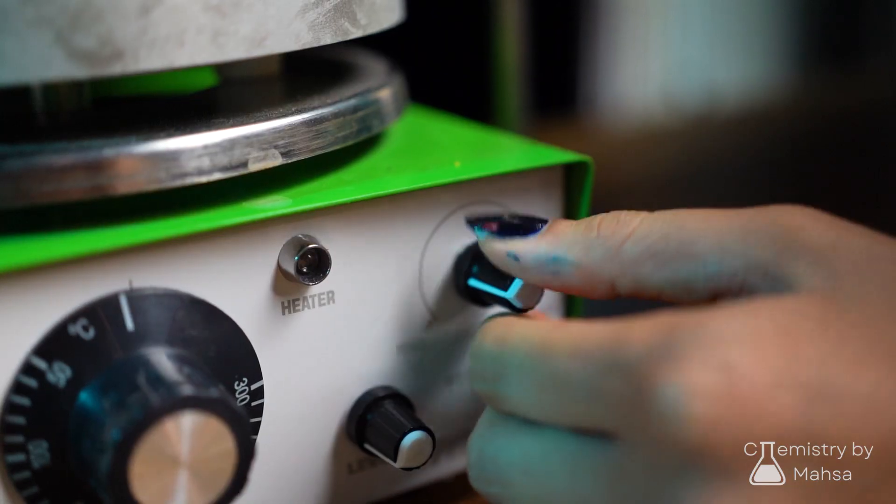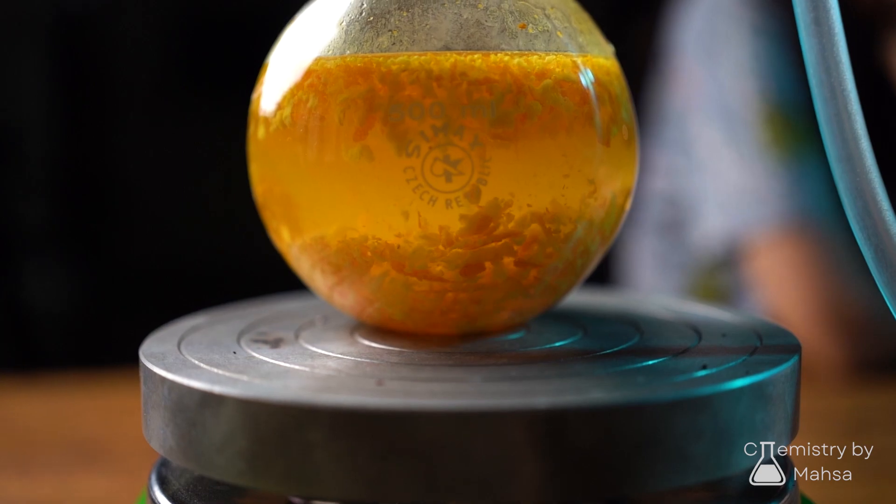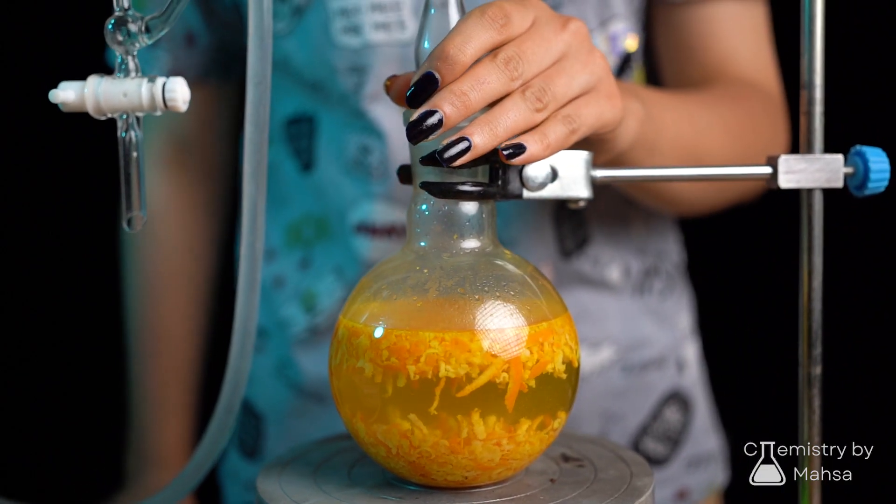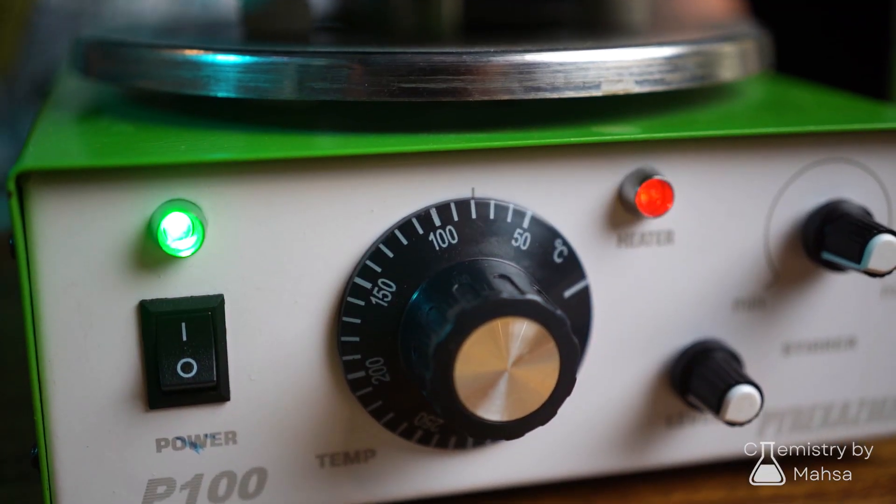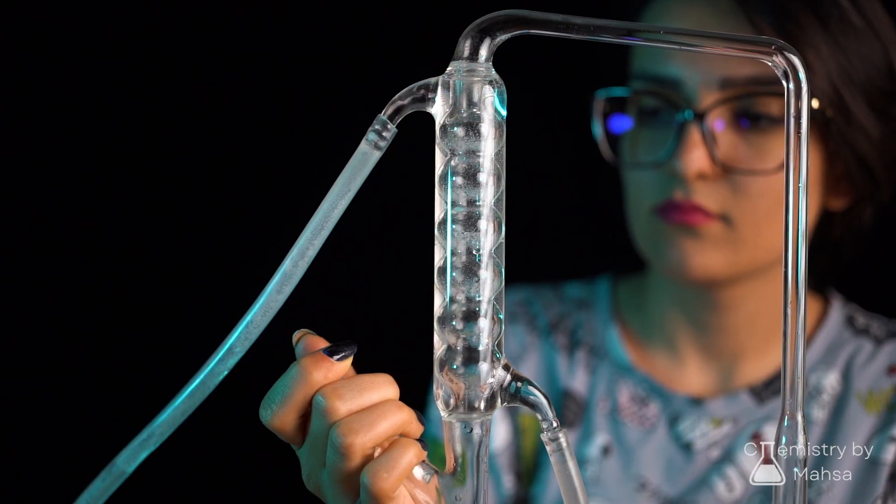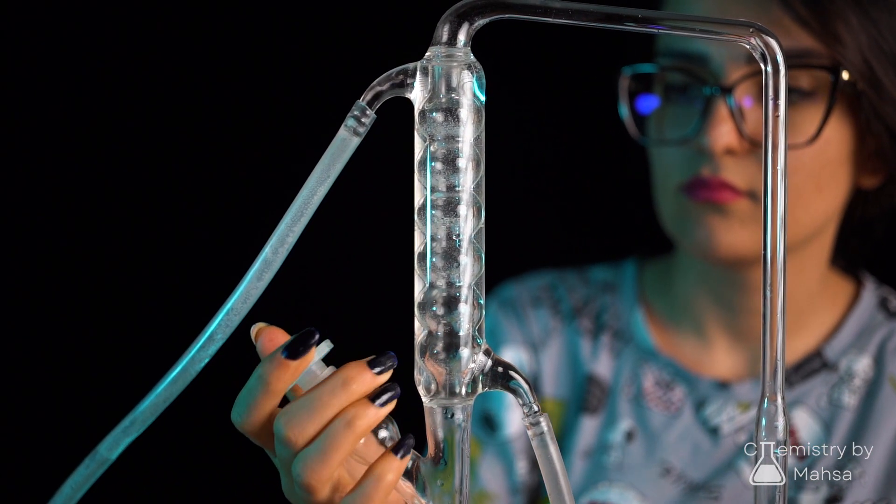So here we go and start the stirrer and the hot plate. The process may take about four hours, and remember not to increase the temperature and just try keeping it around 70 Celsius. Remember, high temperature may have an effect on the final product.